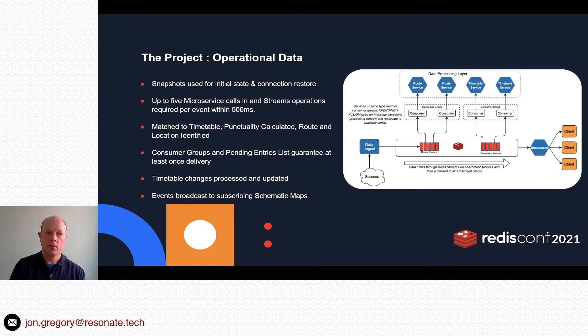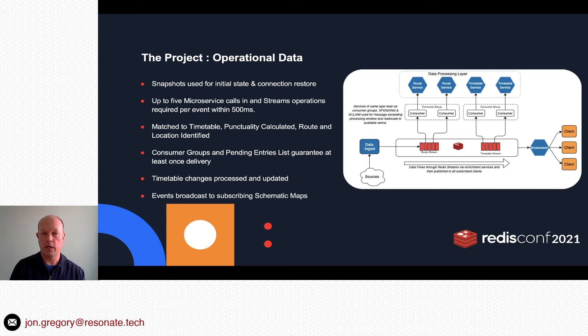One challenge was that a map can be opened at any time, so we needed to quickly display the initial state. We create periodic snapshots within Redis. When a map opens, it takes the latest snapshot and replays any events between that snapshot time and the current time to get the current state — which also works well for connection loss. The maximum we have is five in-sequence microservice calls and stream operations, and we've recorded that going through Redis within 500 milliseconds, well within our one-second end-to-end requirement.